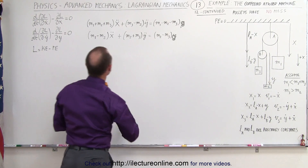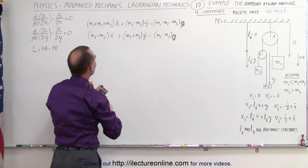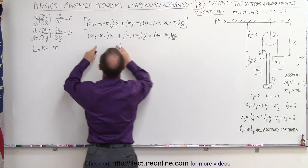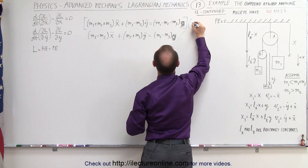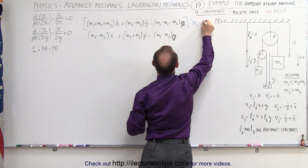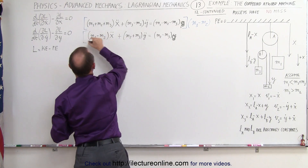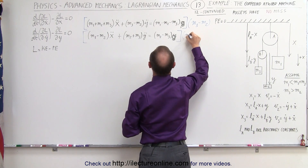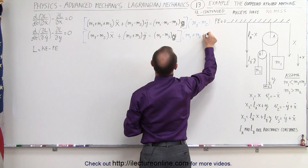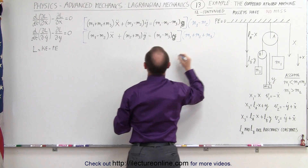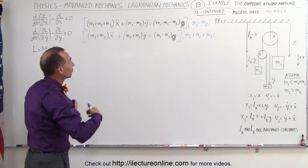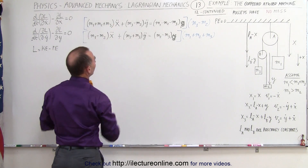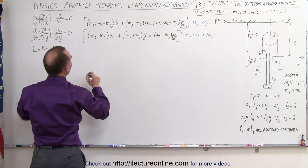To do that, we need to get rid of these components right here, which means we are going to multiply the top equation by the coefficient of x double dot of the bottom equation — so we multiply by m3 minus m2 — and we multiply the bottom equation by the coefficient of x double dot from the top equation, which is m1 plus m2 plus m3. Then we subtract the bottom equation from the top equation and solve for y double dot, because that's how we eliminate these terms.